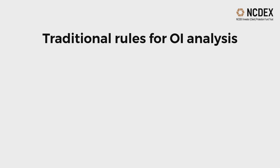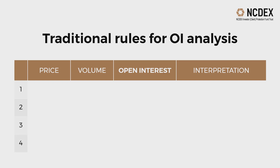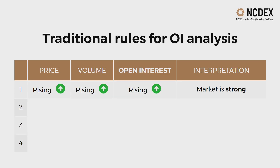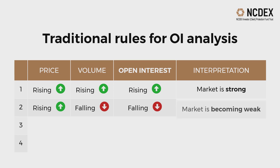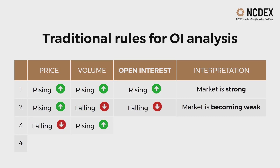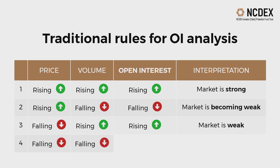Traditional rules for OI analysis can be summed up as follows: Rising prices with rising volume and rising OI indicate the market is strong. Rising prices with falling volume and falling OI indicate the market is becoming weak. Falling prices with rising volume and rising OI indicate the market is weak. Falling prices with falling volume and falling OI indicate the market is becoming strong.